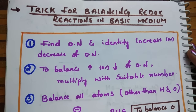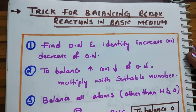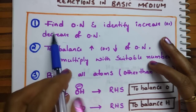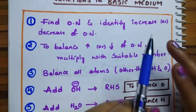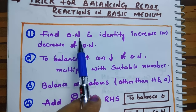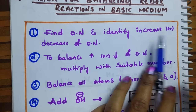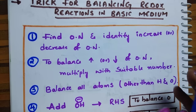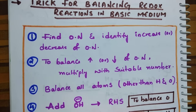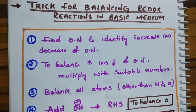In today's session I am going to discuss a trick for balancing redox reactions in basic medium. To balance a redox reaction, five things you should know. Tip number one: find the oxidation number. Take the skeleton equation and find the oxidation number of atoms, then identify whether the oxidation number of an atom is increasing or decreasing in that reaction.